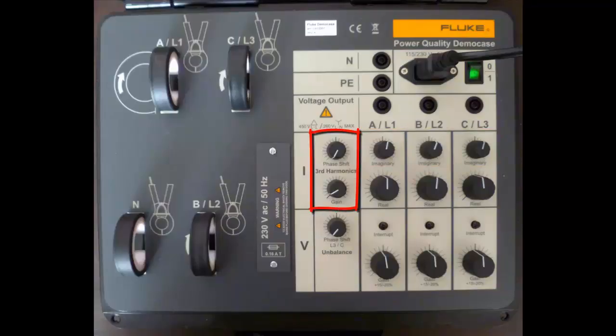Over on this side we have some additional controls for current. Here we can induce current harmonics. We have one which we call the gain, which is the amount of harmonic we have. And then above that we have the phase shift, that is the difference between the angles of each of the harmonics.